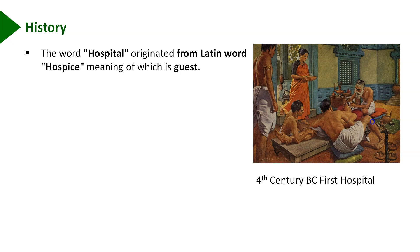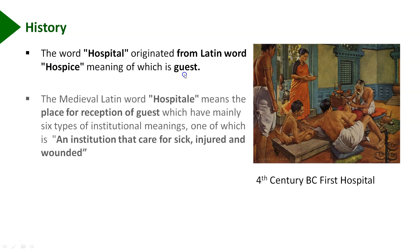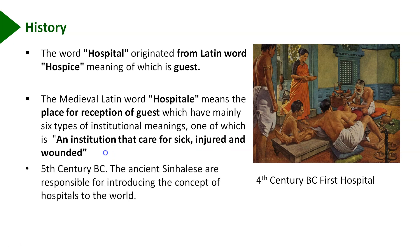The word hospital originated from the Latin word hospice, meaning guest. The medieval Latin word hospital means the place for reception of guests, which has mainly six types of institutional meanings, one of which is an institution that cares for the sick, injured and wounded. Hospitals existed even before the 4th century BC. The first hospital's treating physician is said to be Charaka, where in Ayurveda the Charaka Samhita is very famous — that is considered the beginning of the hospital, where evolution of mankind began in India.